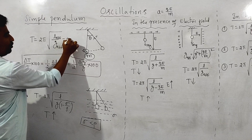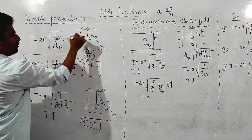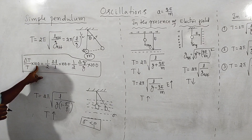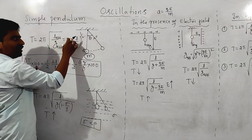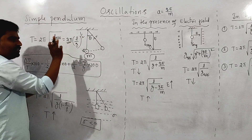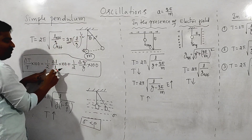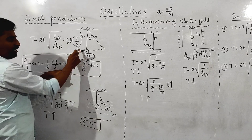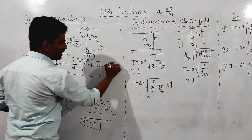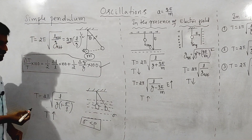The time period will be T = 2π√(L/G)^(1/2). To calculate percentage change: δT/T × 100 = ½(δL/L × 100) + ½(δG/G × 100). The constants cancel out. This is the formula to calculate the change in time period or percentage change in the time period.